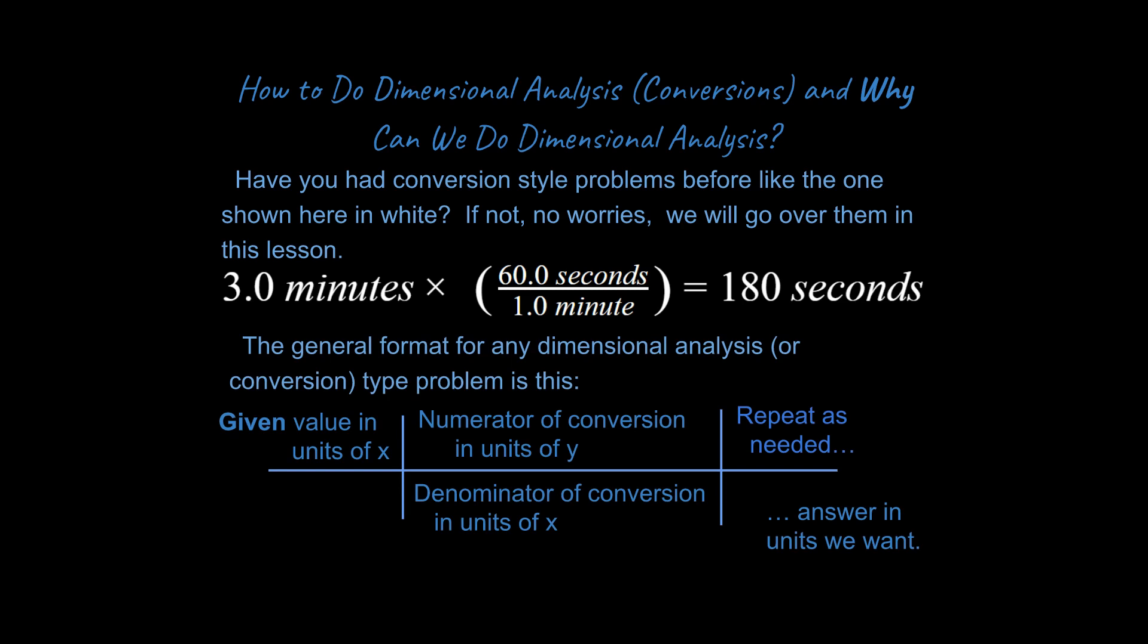So the general format, I'm going to do an overview first, and then we're going to dissect what's going on here. The general format is you're going to have a given value in units of x, and you're going to multiply it by a fraction where you have numerator of your conversion in units of y, denominator of conversion in units of x.